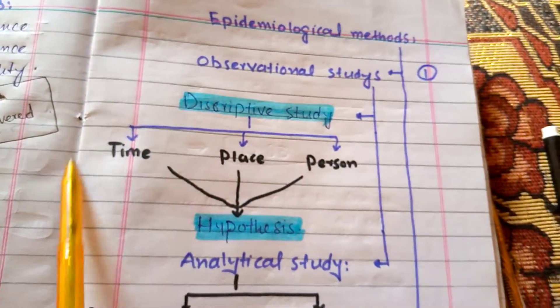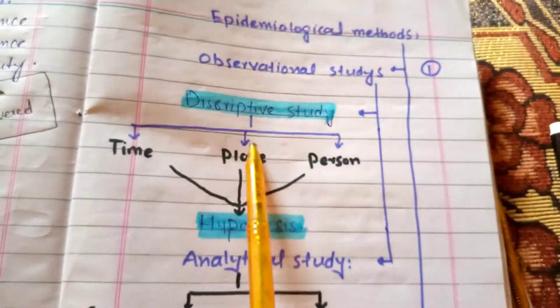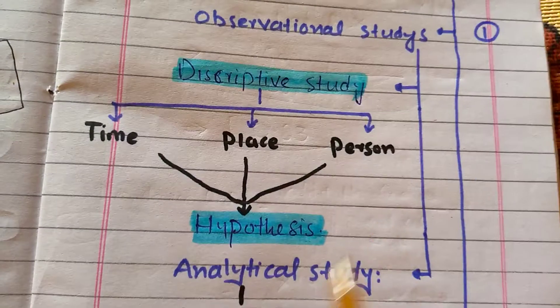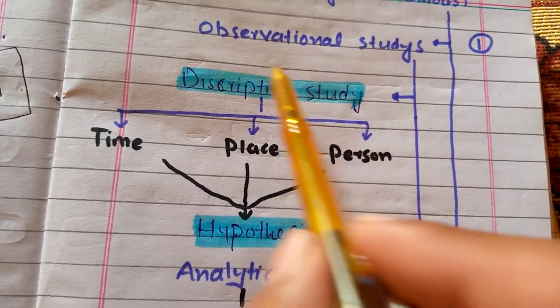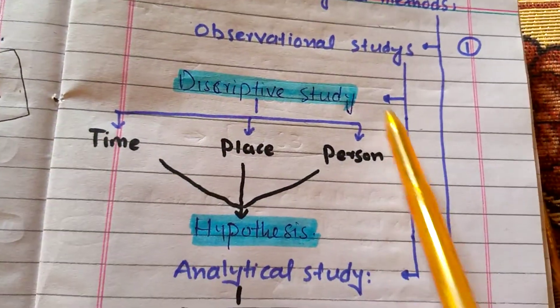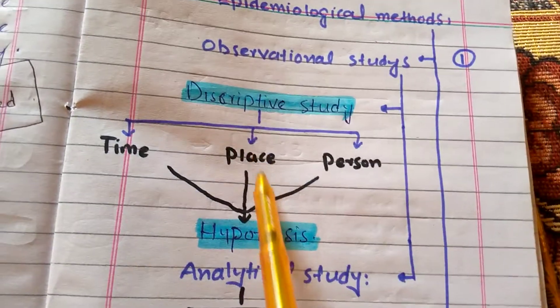Descriptive study is defined as the description and defining of disease in a community by time, place, and person. By studying a disease in a community, descriptive study makes a hypothesis.